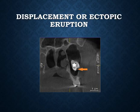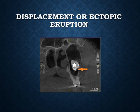Displacement or ectopic eruption is the abnormal position of a tooth — both crown and root — within the dental arch. When the crown and root are outside the dental arch in an aberrant position, it is called displacement.